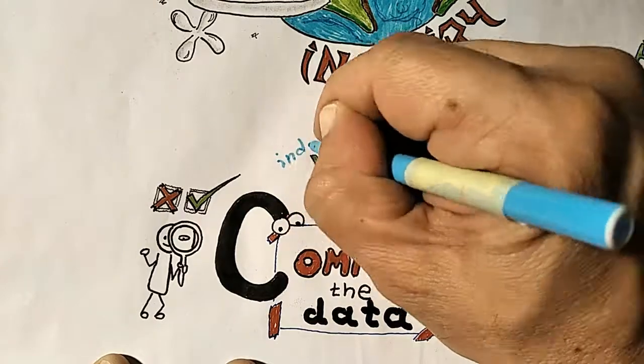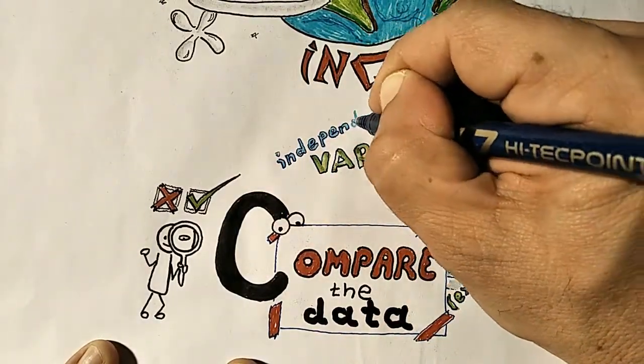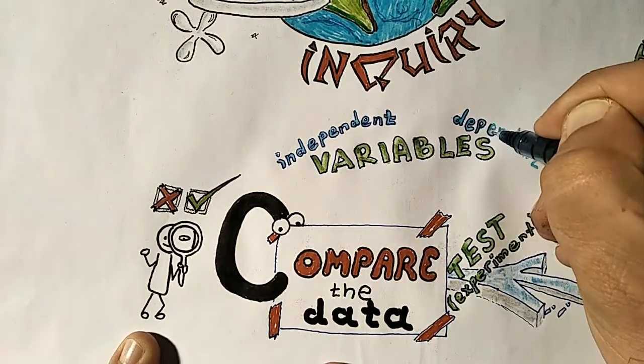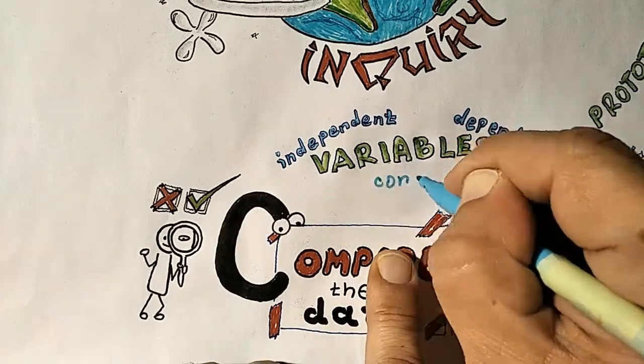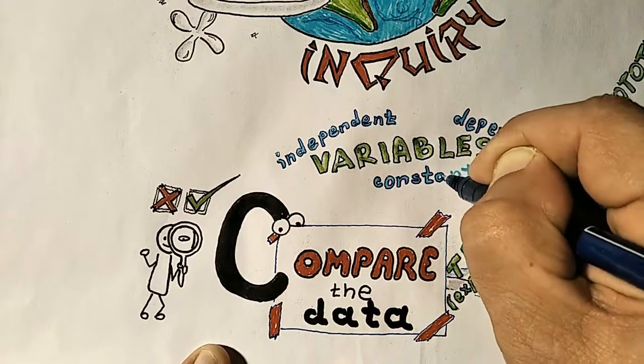It is important to understand the independent variable, the variables which are under your control, from dependent variables, those ones which you measure and don't know their values at the beginning. And the third type of variables, those ones which are not changing at all, so called constant variables.